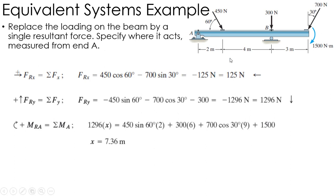So a resultant force, which is 125 to the left, 1296 down, is located 7.6 meters away from point A, which would be right here. So that force would be essentially right here.